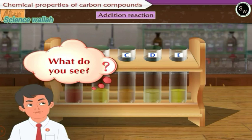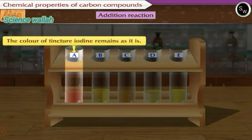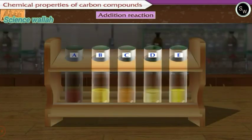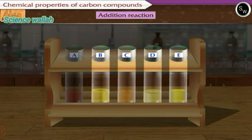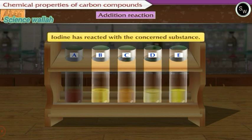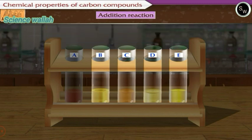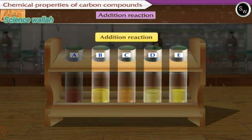The color of tincture iodine remains as it is in test tube A, while in the remaining other test tubes the color of tincture iodine is seen to have vanished. From the observation of the vanishing of tincture iodine, we understand that tincture iodine has got used up in the solution, which means that iodine has reacted with the concerned substance. The name of this reaction is addition reaction.